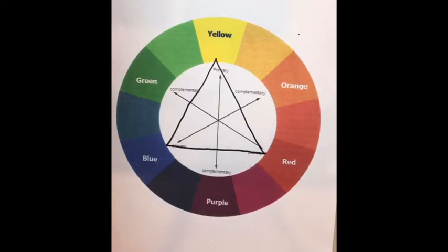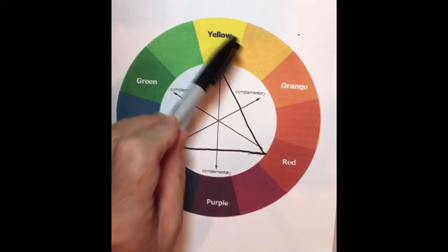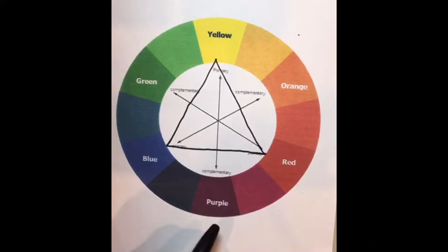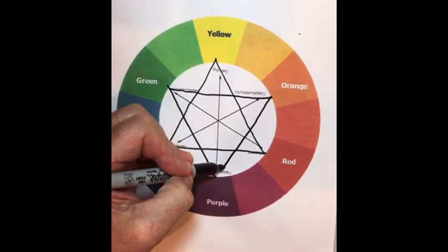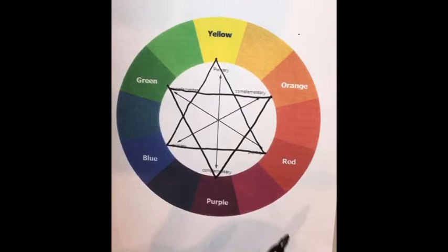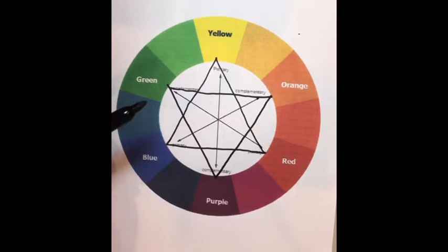Now, if you mix two primary colors together, you get another set of colors called secondary colors. If you mix yellow and red together, you get orange. If you mix red and blue together, you get that awesome purple color, or violet. If you mix blue and yellow together, you get green. So let's make a triangle for those three colors. See how they interact with each other. All right. Looks like the Star of David, doesn't it? Okay. So now we have our primary colors, yellow, red, and blue. Secondary colors, orange, violet or purple, and green. And they all work together.